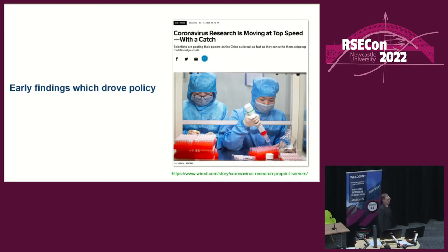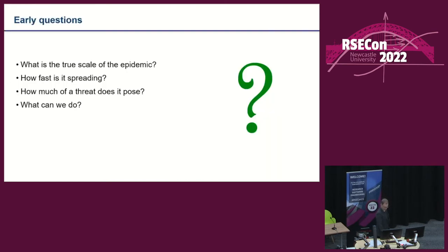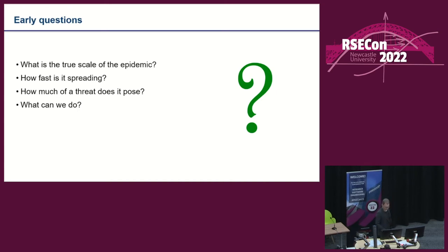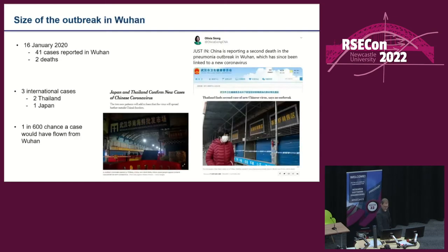Now I'll switch to the actual pandemic and the science, talking about the early work between about January and March 2020, which really drove a lot of policy. We have common questions we address with every new emerging disease: what's the true scale of the epidemic, given that diseases are typically underreported in their first few weeks and months? How fast is it spreading? How transmissible is it? How much of a threat does it pose — what proportion of people need to be hospitalised and are dying? And finally, what might we do about it?